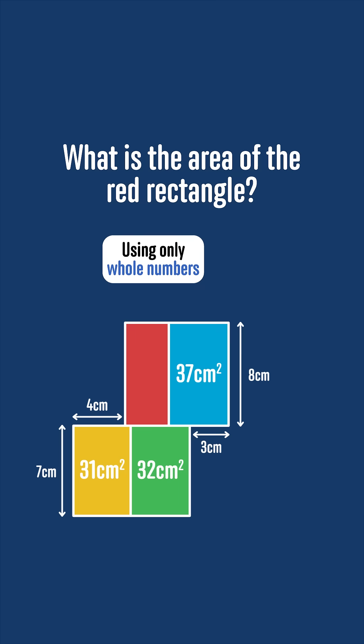If we didn't have this rule, then you could start by saying that the yellow rectangle has a length of 31 divided by 7, but that's not allowed here, so you need to find another way.